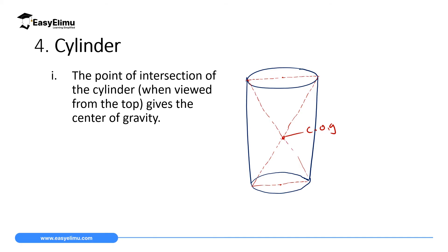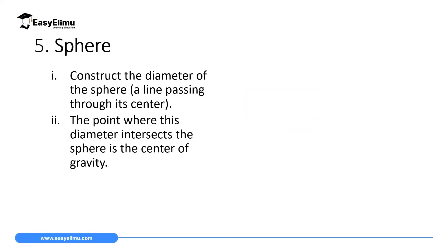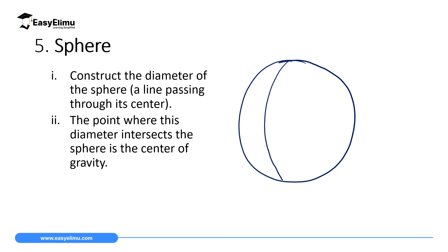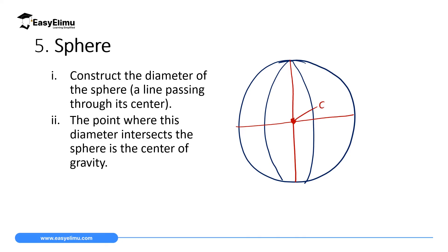The fifth shape is a sphere. To determine the center of gravity of a sphere, draw two diameters — one running through the center and another through the center in a different direction. Where these two diameters intersect, that will be the center of gravity of that sphere.